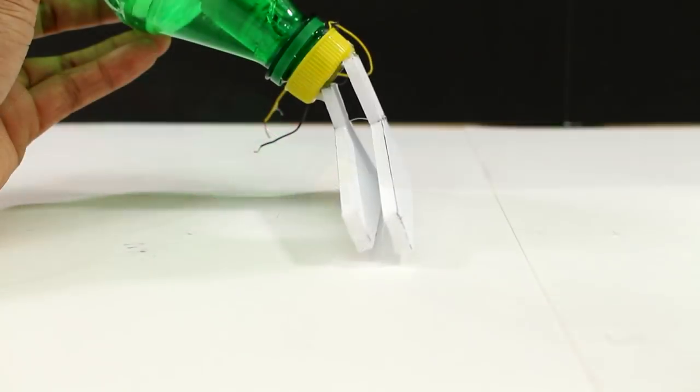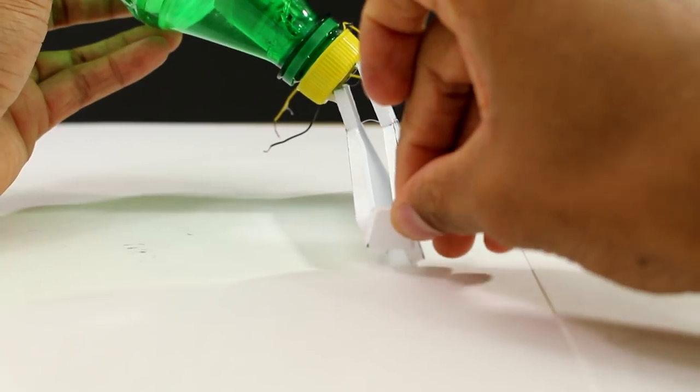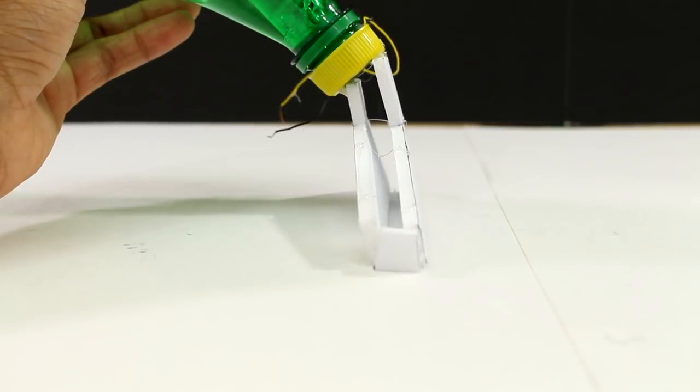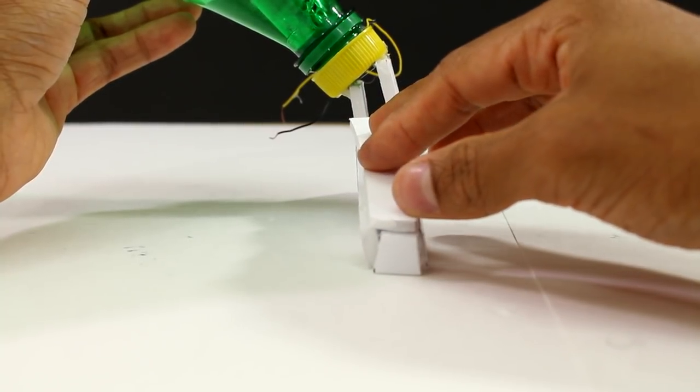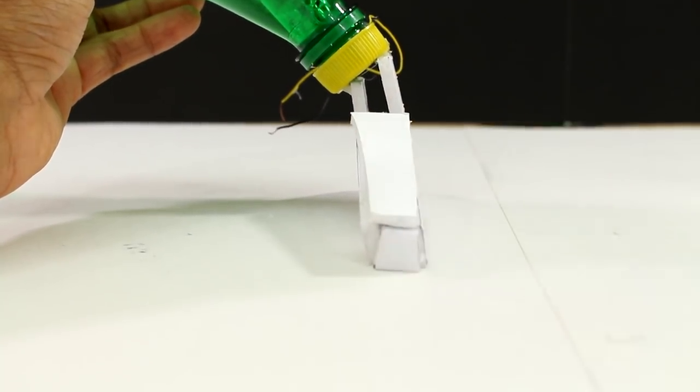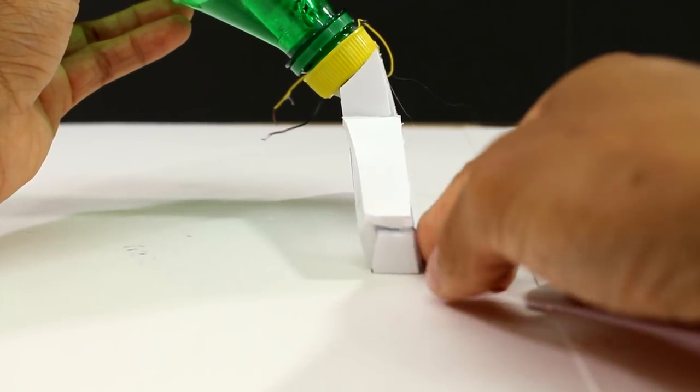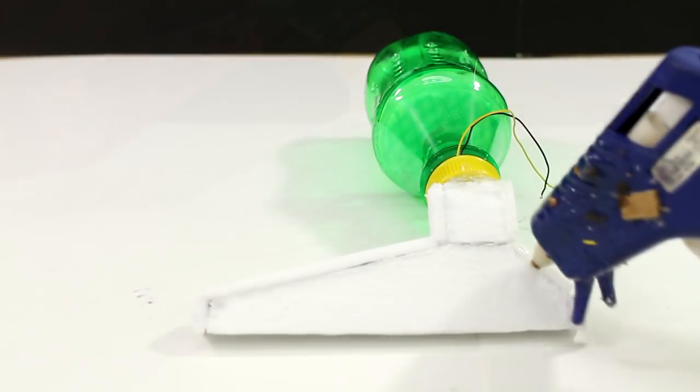Basically, the closer they are to each other, the less air that will be able to flow through there, and that will force the air to travel at a higher speed. After everything's in place, we just want to add a bunch of glue to make this completely airtight.